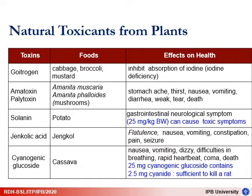Other natural toxicants are originated from plants. Goitrogen, for example, is found in cabbage, broccoli, and mustard, and has been reported to inhibit the absorption of iodine, thus causing iodine deficiency in humans. Amatoxin and phallotoxin are produced by Amanita, the genus of mushrooms, causing stomach ache, thirst, nausea, vomiting, etc. There are also other chemicals found in plants such as solanine in potatoes, jencolic acid in jengkol, and cyanogenic glucoside in cassava.